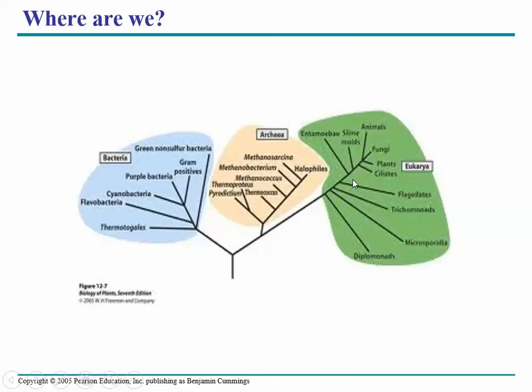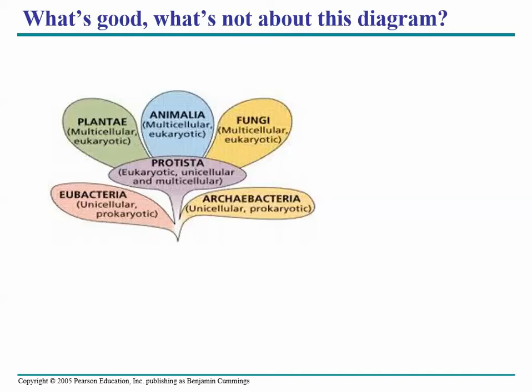This is one representation of the tree of life. Here's another one. I like to use a lot of different models — these are just ways of picturing life on Earth. What's good and what's not good about this diagram? Take a second and look at it. What do you think I'm going to like, and what am I going to not like?